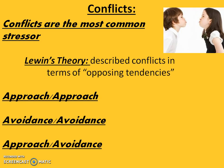So you're stuck between two things you don't want, and if you have to choose, you'll choose the lesser of two evils. The third type of conflict Lewin identified was approach-avoidance, in which a person is both attracted to and repelled by the same goal.